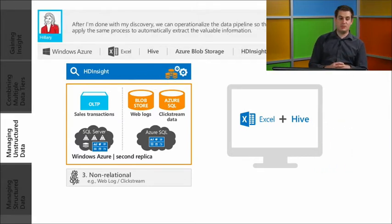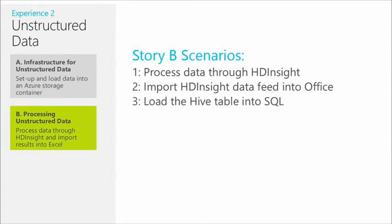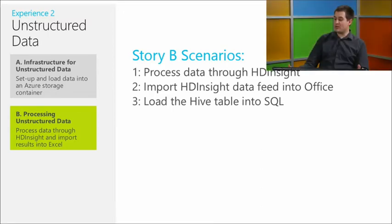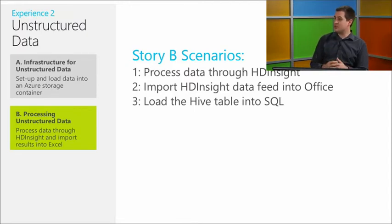We can see that directly inside Excel. Specifically in this module, we're processing unstructured data through HD Insight, then using Excel to look at that data and load a Hive Table back into SQL Server. The reason we'd take that data from Excel and put it back into a structured store like SQL Server is that multiple people may be running HD Insight jobs across multiple Azure storage accounts, making it hard to track what's being stored where or who's using that data — it's essentially just a file on a file system.